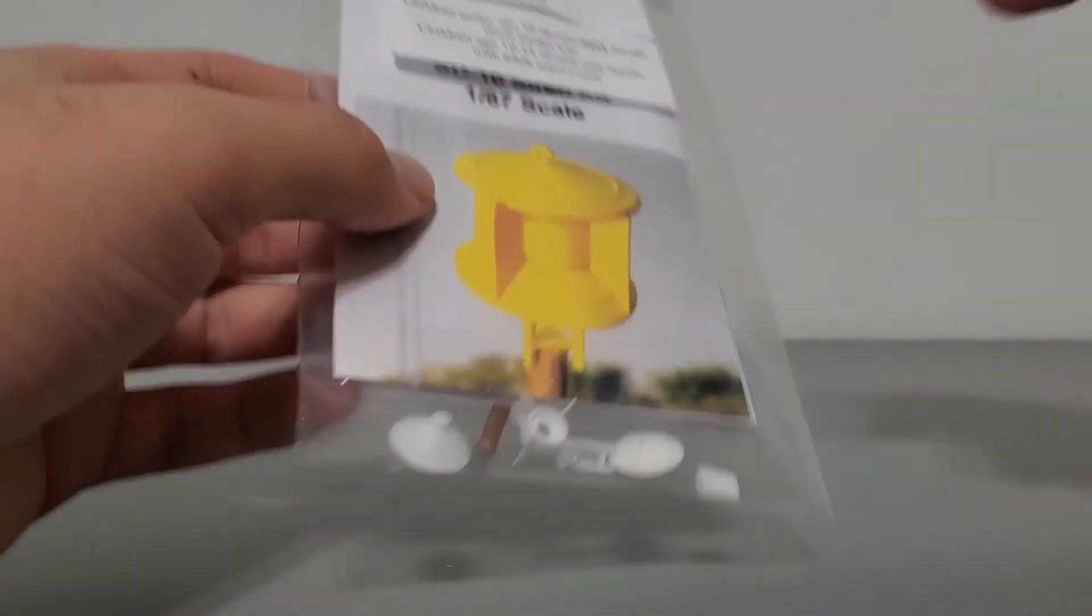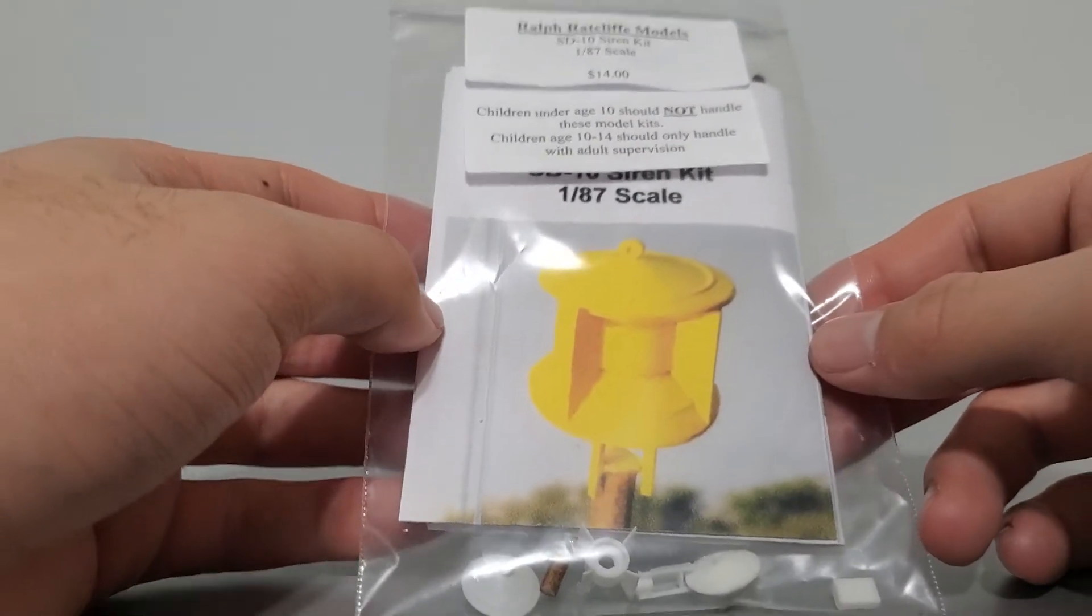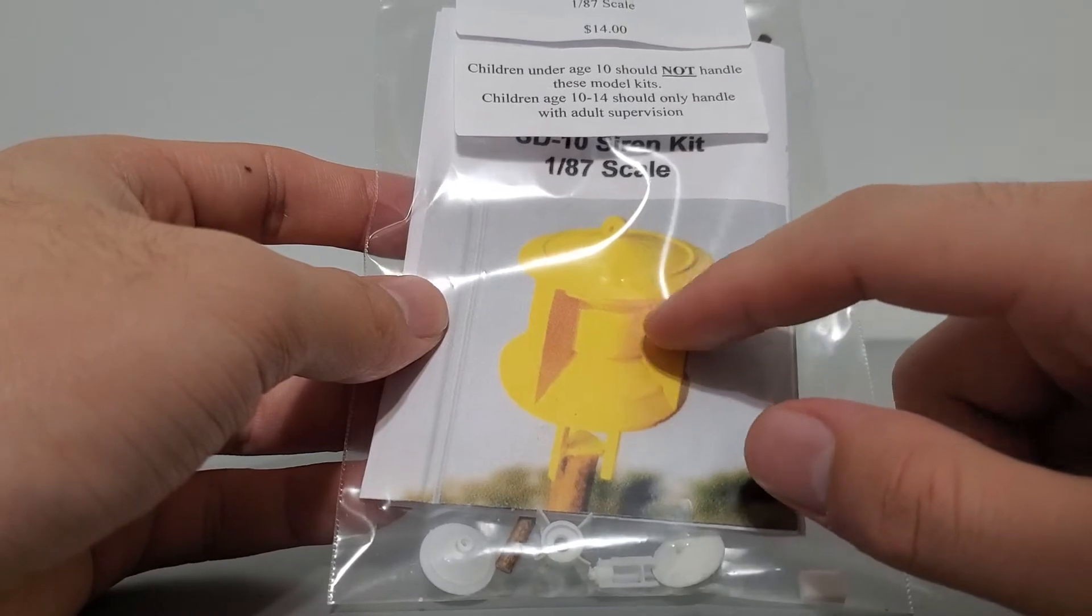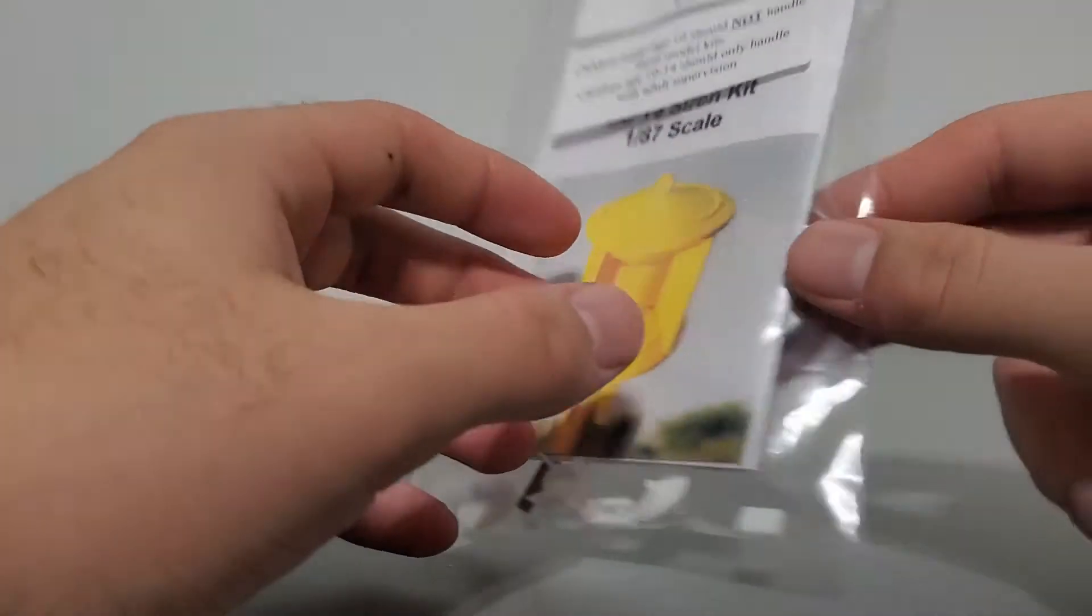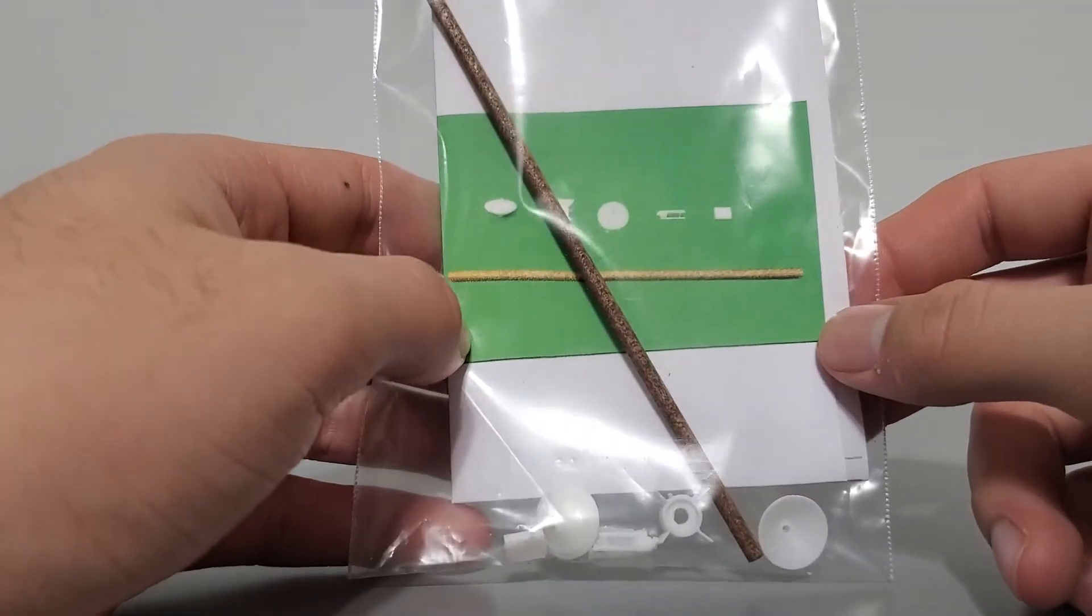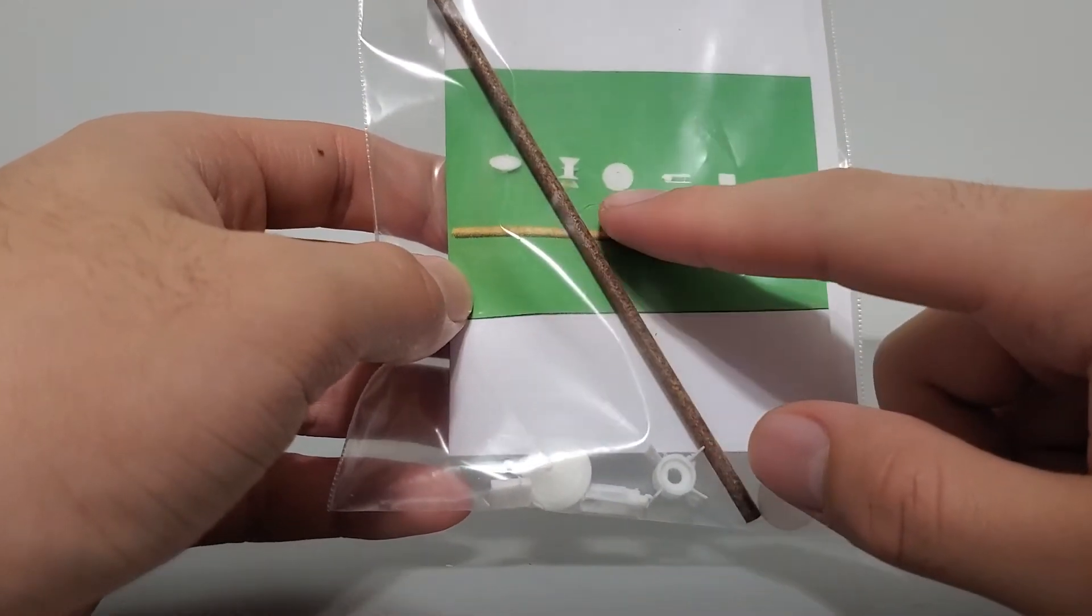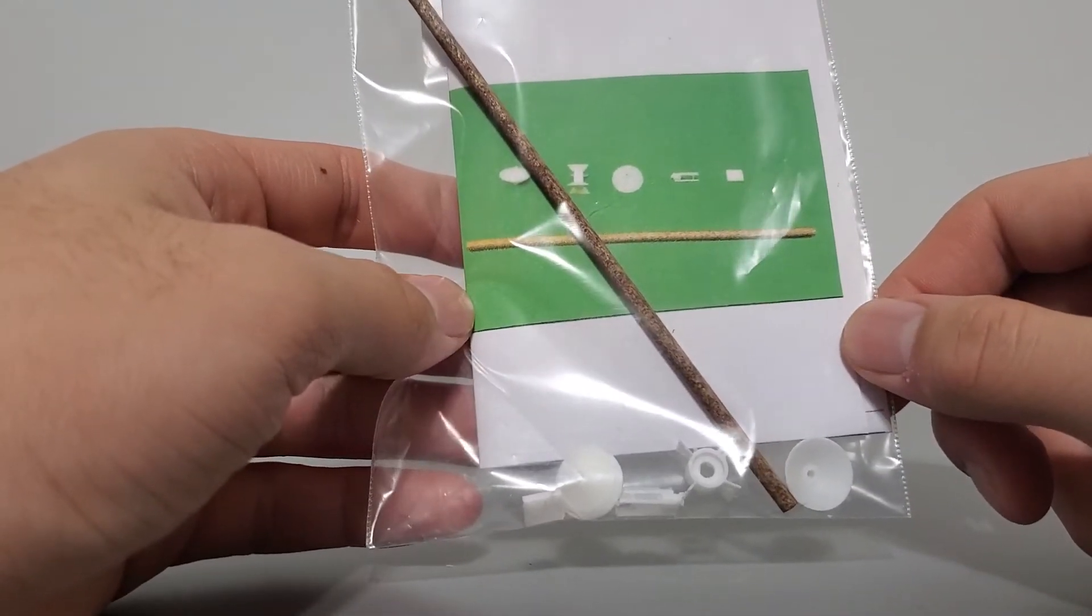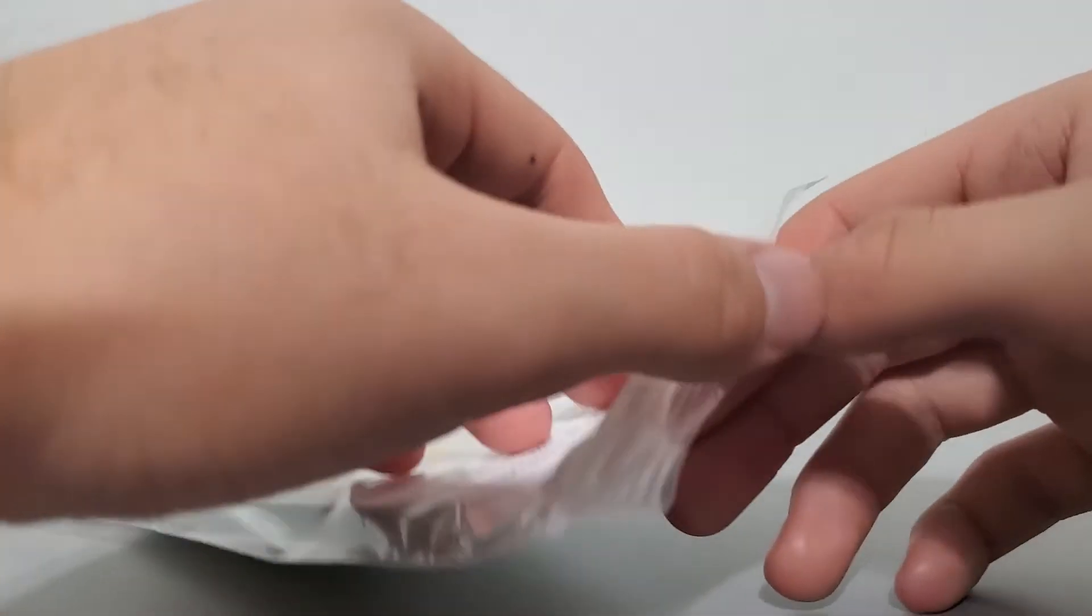So without further ado, let's begin. This is what the kit looks like. It looks pretty interesting. I really like the bright yellow SD10 sitting here on the instruction page cover, it looks cool. It even has the picture of the parts inventory here, so that's nice. You can see there's a total of six pieces in this kit. Let's open it up and have a look at them.